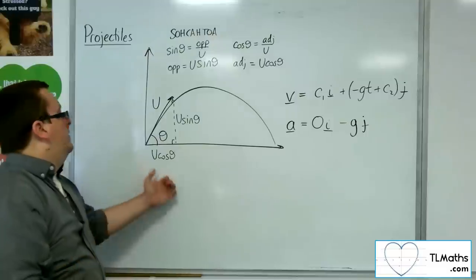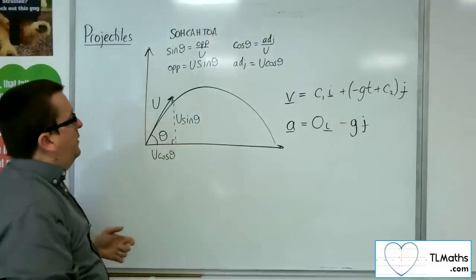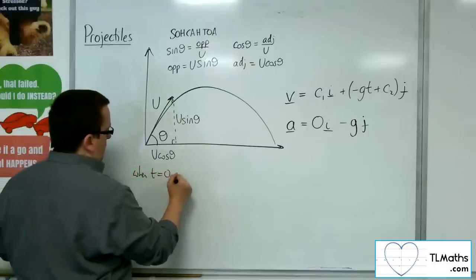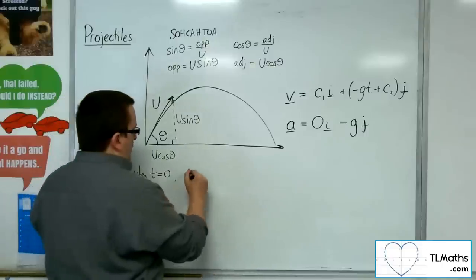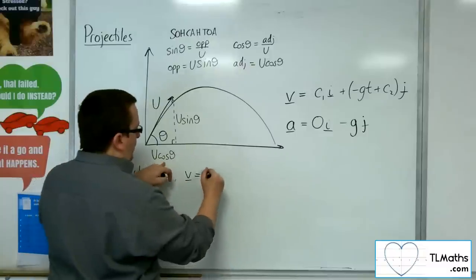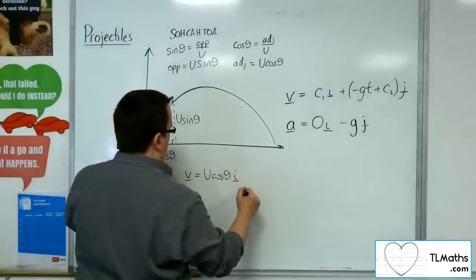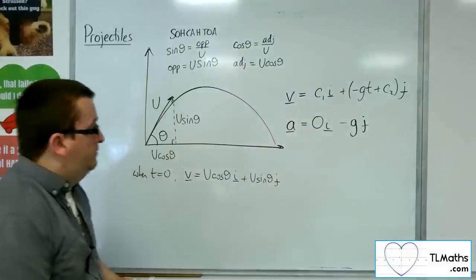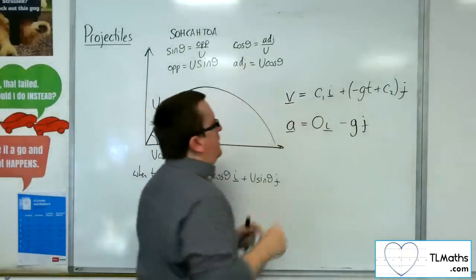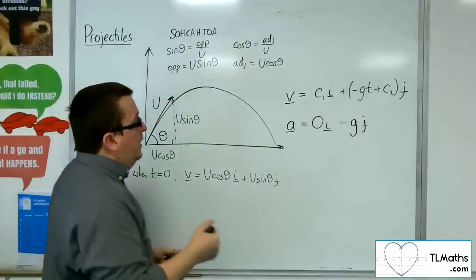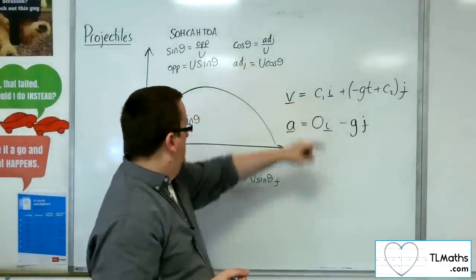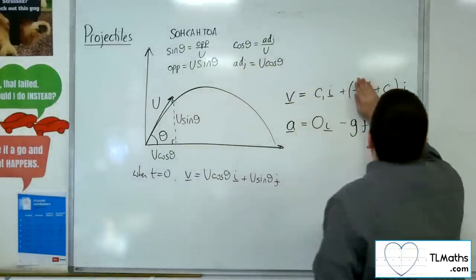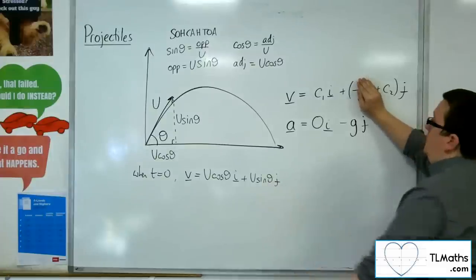So, we've got u cosine theta and u sine theta. So the initial velocity, so when t is 0, the initial velocity v is equal to u cos theta i plus u sine theta j. So, we can substitute those values in. Initially, so c1 has got to be equal to the u cos theta. And when t is 0, the c2 has got to be equal to the u sine theta.